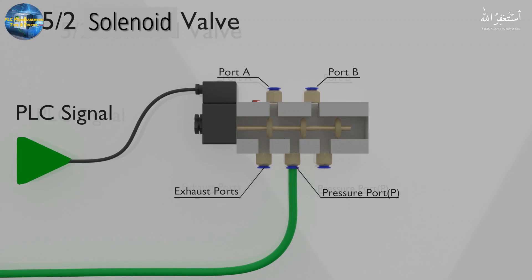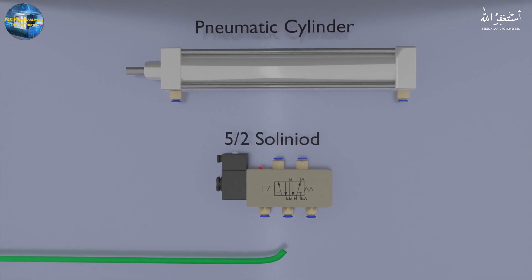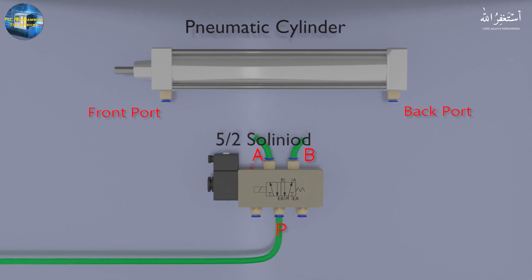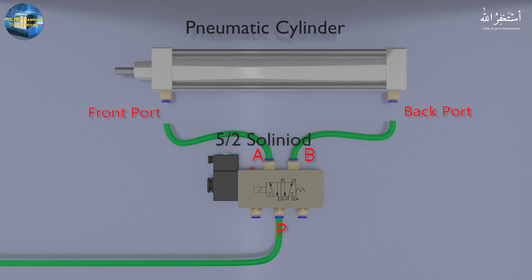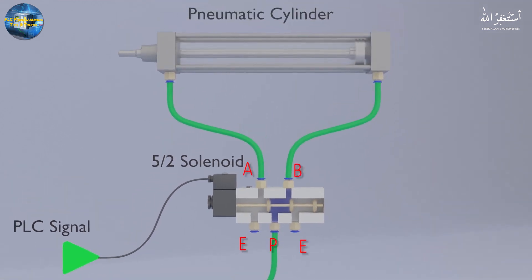We will now see how the 5/2 way valve controls a double-acting pneumatic cylinder to control the linear motion of the cylinder shaft. We connect port A and port B of the solenoid valve to the ports of the cylinder with pneumatic pipe. When the PLC signal energizes the coil of the solenoid valve, its spool moves and links the pressure port with port B of the solenoid valve, and port A with the exhaust port.